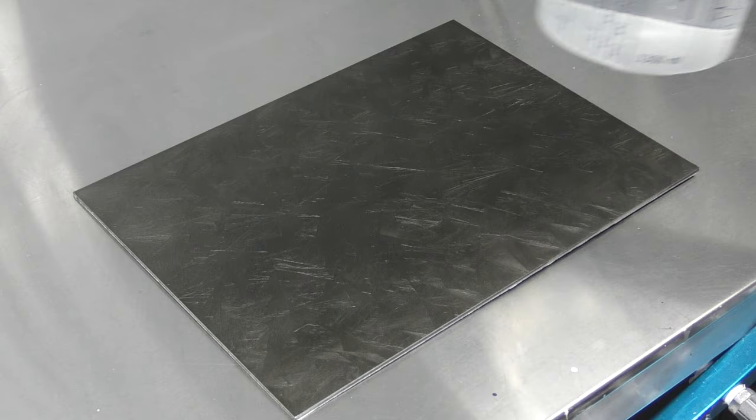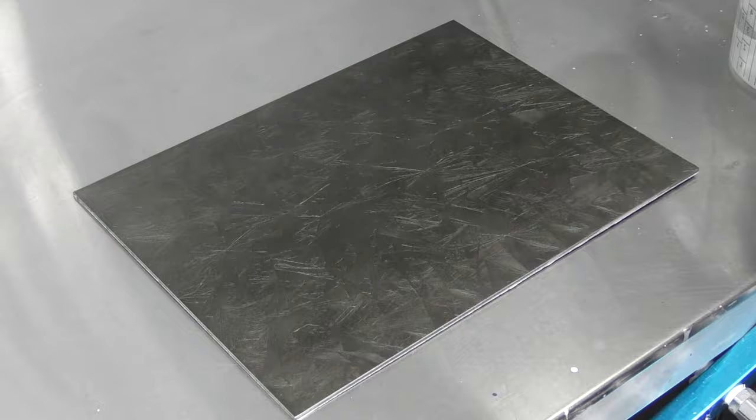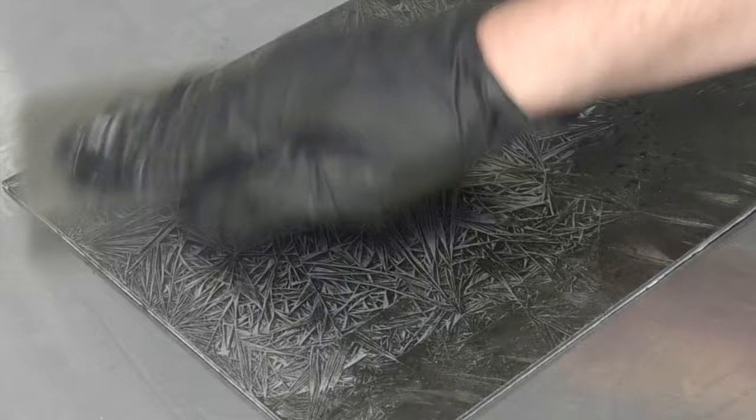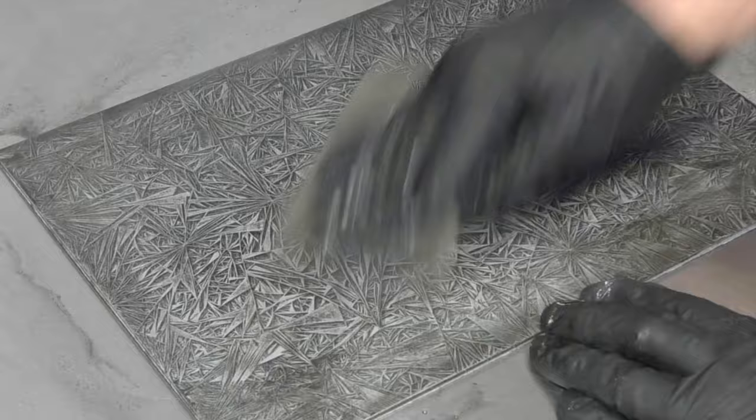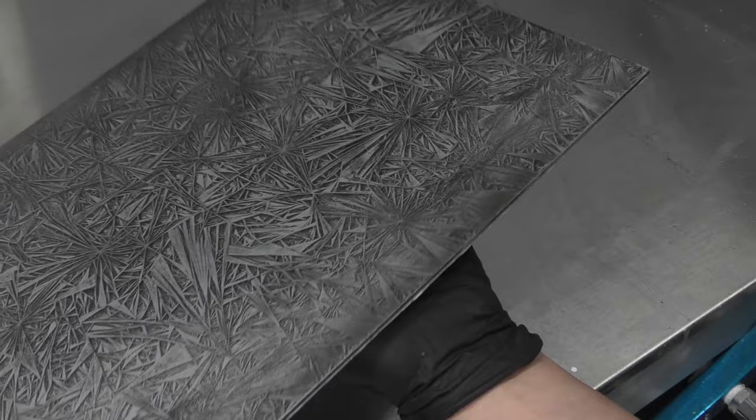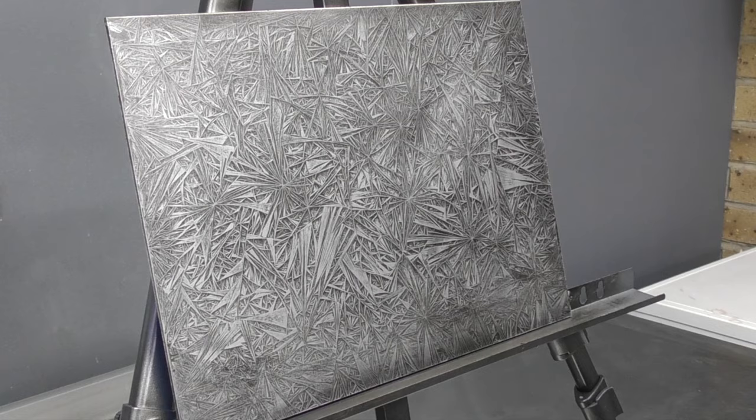So now using warm water and a gray scotch pad, I'm going to scuff the area, which should create our mutant crystal pattern. Going all directions so that I get it scuffed properly. Using a paper towel, gonna go ahead and wipe that dry. And then we have the pattern ready for candy. So now I'm going to spray a red candy over the top.